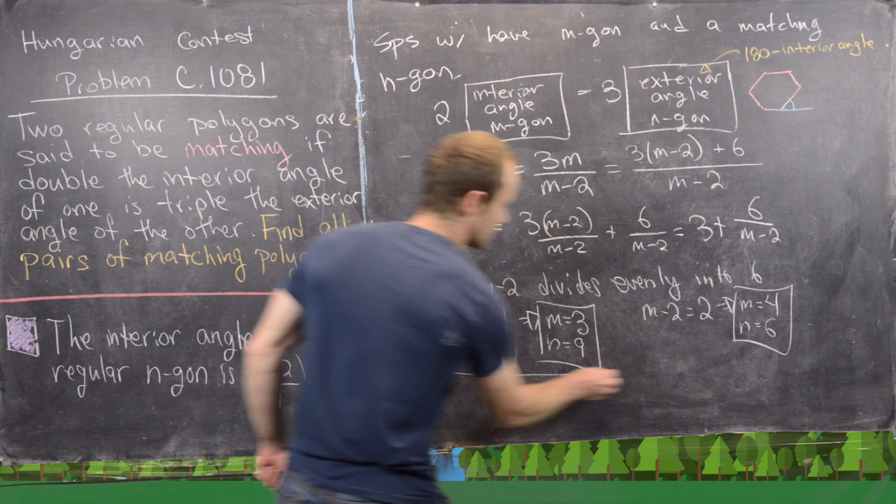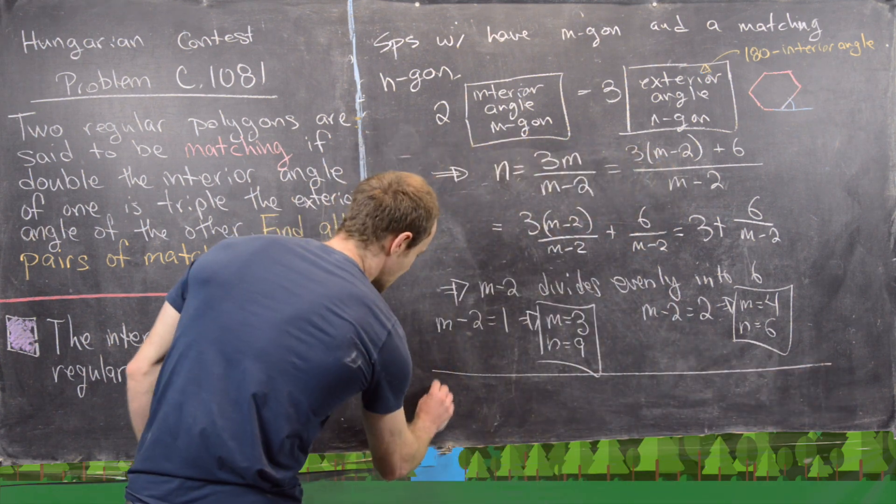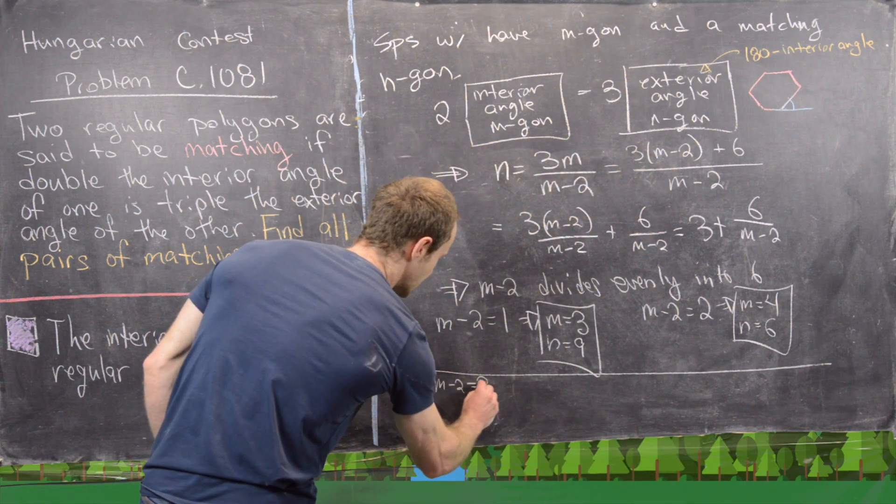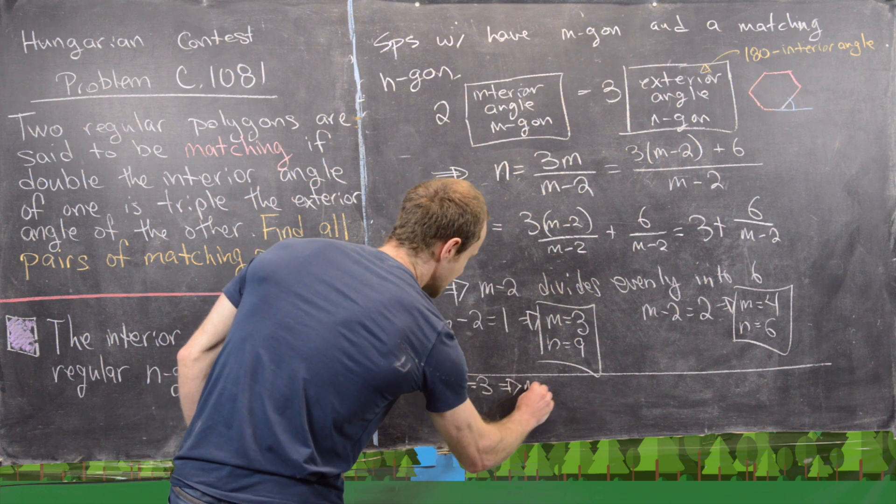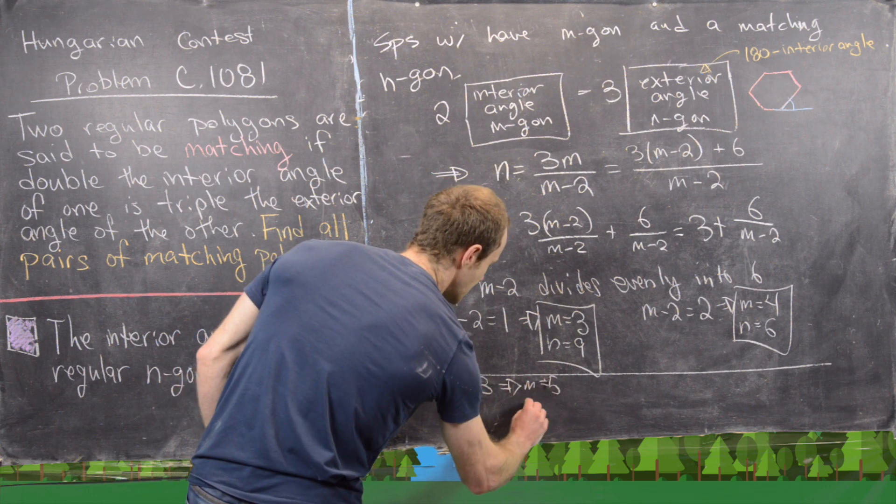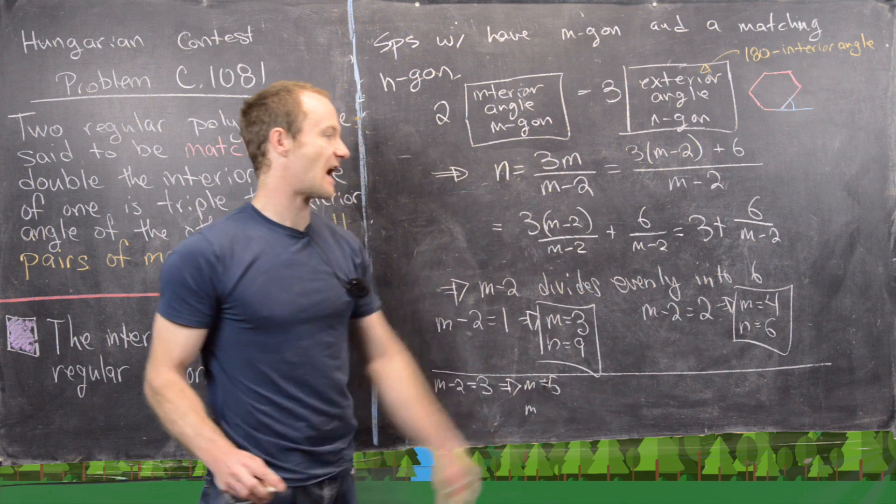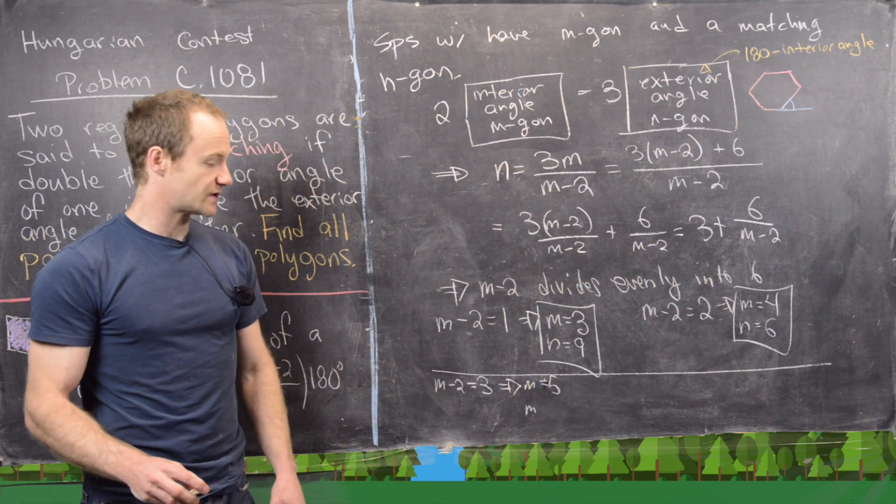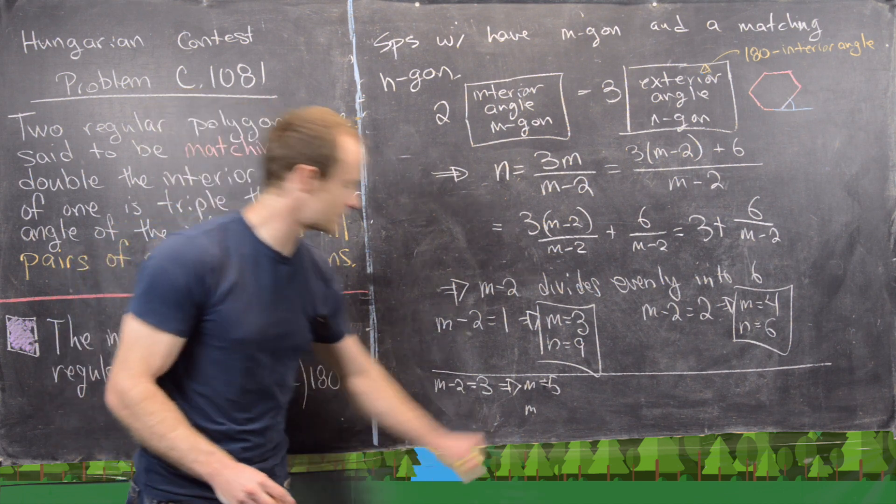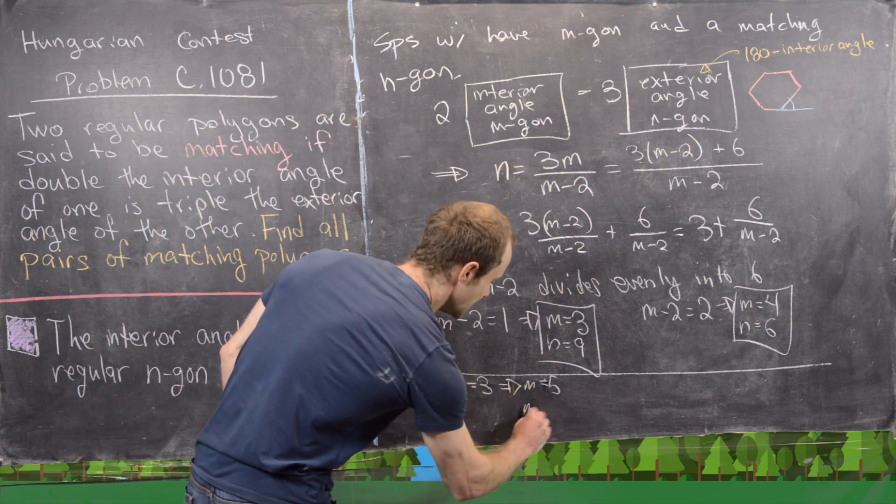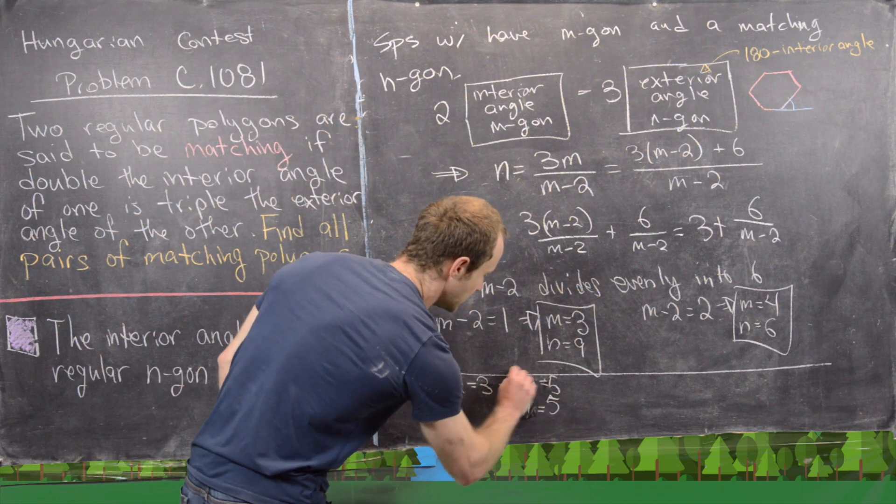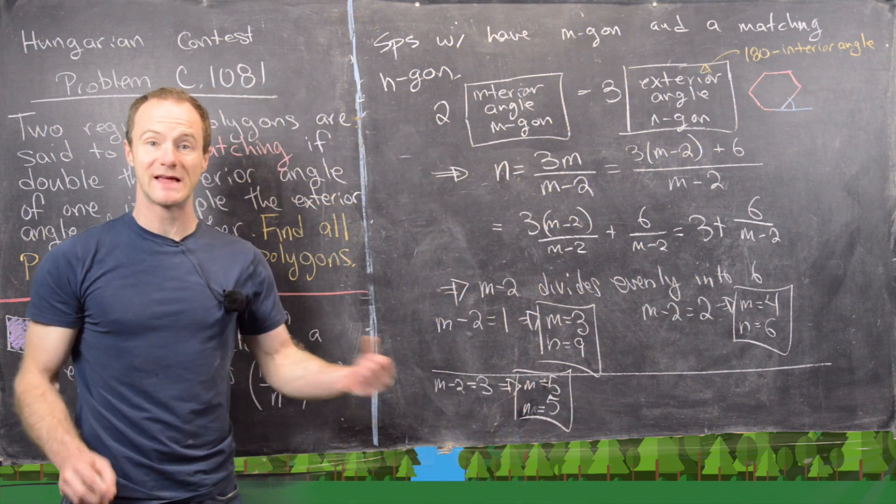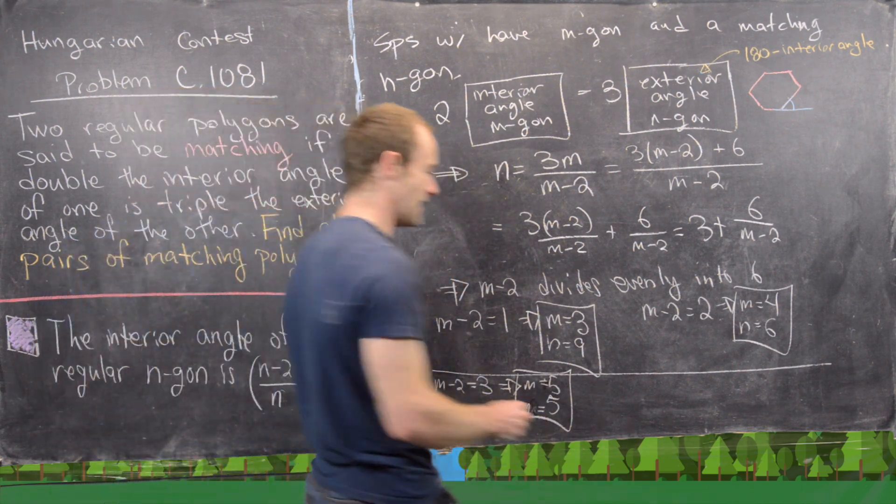Now let's look at the last two pairs. So we have m-2 could be equal to 3, which makes m equal to 5. But then if m equals 5, we have 3 + 6/3, so we have n equals 5 as well. So two pentagons will work in this case.